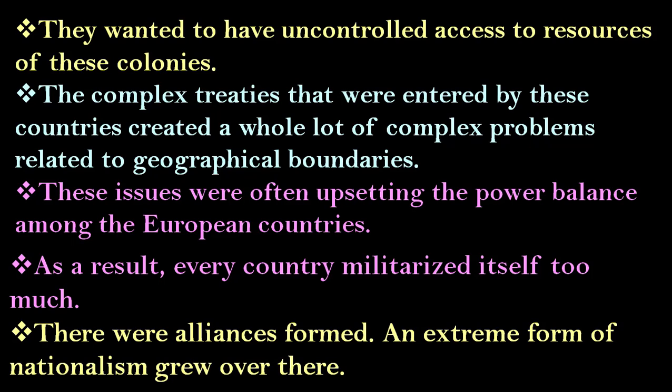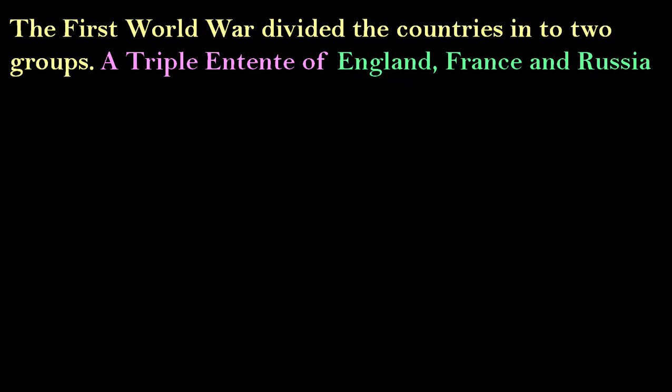As a result, alliances were formed. Some countries grouped themselves together. An extreme form of nationalism grew. The First World War divided countries into two groups: the Triple Entente of England, France, and Russia.